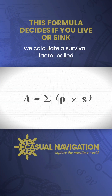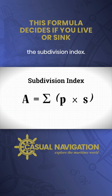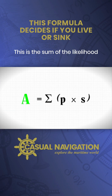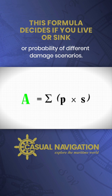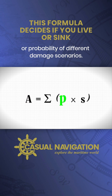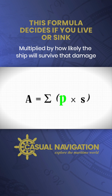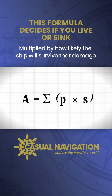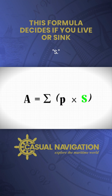To do this, we calculate a survival factor called the Subdivision Index, A. This is the sum of the likelihood or probability of different damage scenarios, P, multiplied by how likely the ship will survive that damage, or the survivability, S.